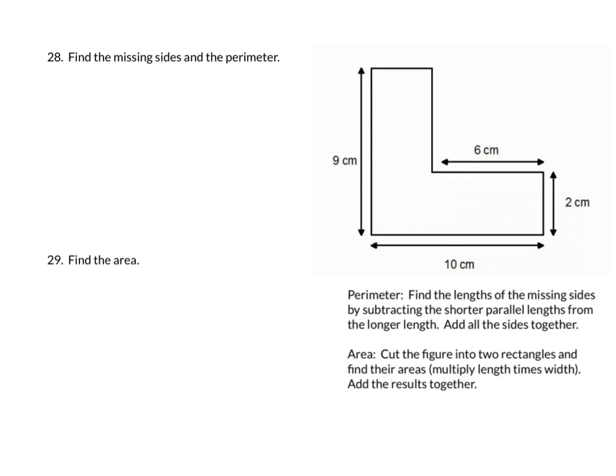The first thing that we're going to look at is the funky figure, so we're going to find the perimeter and the area. For perimeter, the first thing we need to do is find the lengths of the missing sides by subtracting the shorter parallel side from the longer side. After that, we're going to add all the sides together.